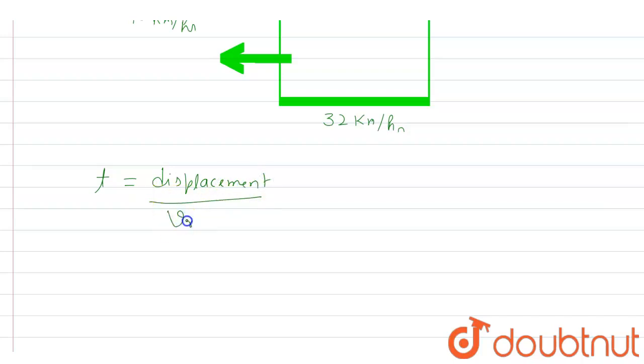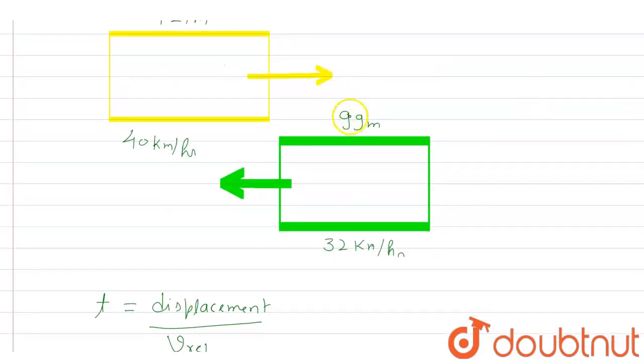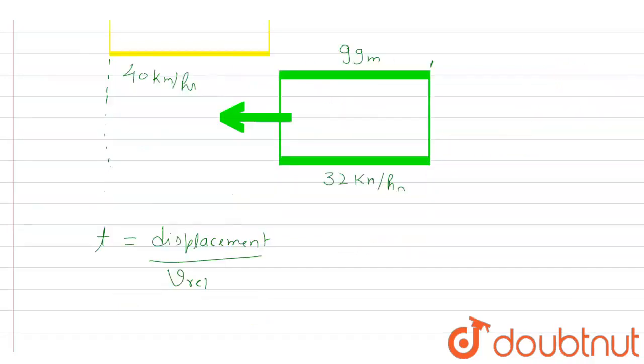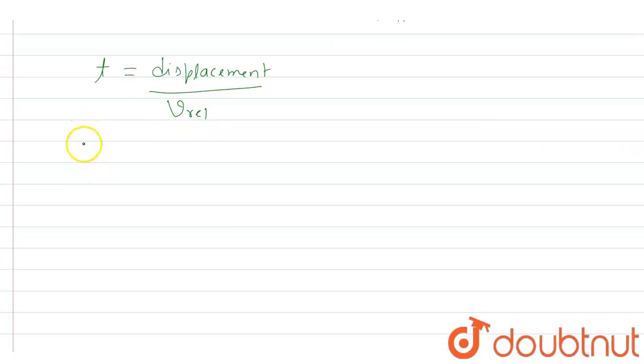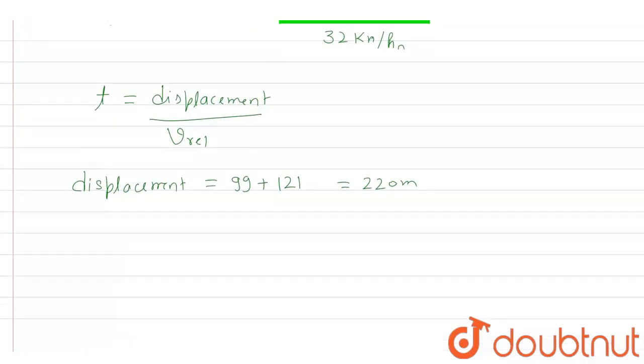If the compartment of this train reaches to here, then they will cross each other. So the total displacement will be 99 plus 121, that means length of the first train and the length of the second train. So displacement is equal to 99 plus 121, and that gives us 220 meters, the length that it has to cover.